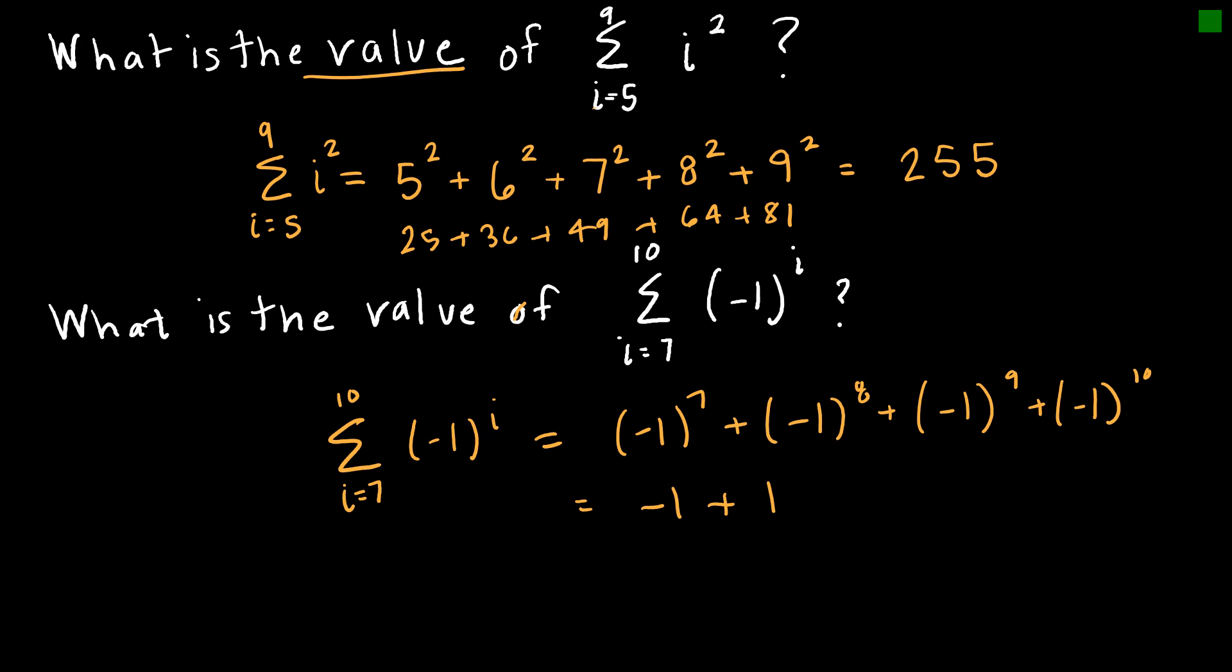Negative 1 to the 9th gives me a negative 1 because it's an odd number of negatives. Negative 1 to the 10th gives me a positive 1 because it's an even number of negatives. And if I add those up, I get a summation of 0.